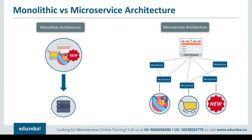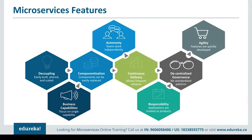Let's summarize the difference between both architectures. In short, monolithic architecture had a single framework for all features on a single database, whereas microservice architecture has different microservices for each and every feature handling their own database. The features that made developers shift to microservices include: applications were easily built, altered, and scaled; they focused on a single capability; all components could be easily replaced; teams worked independently; they allowed frequent releases; applications were treated as products; and all features were quickly developed.